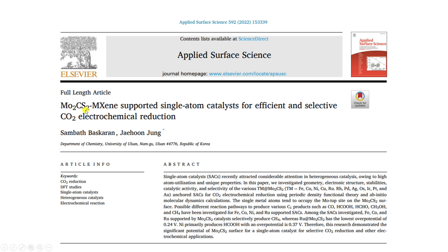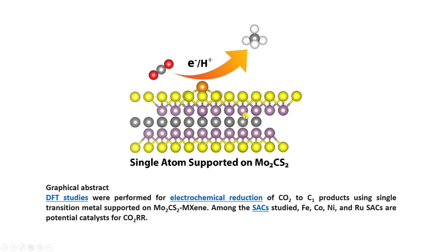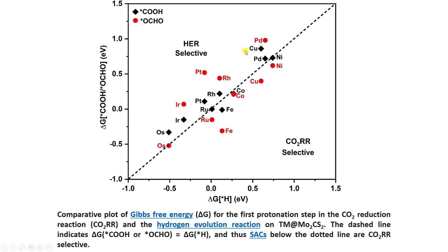This is from my recently published paper on MXene-supported single atom catalysts for efficient and selective CO2 reduction. This is the graphical abstract — the CO2 is reduced on the FE catalyst, which takes a proton and electron to produce methane. For that paper, I calculated this selectivity profile to check the selectivity for CO2RR versus HER.